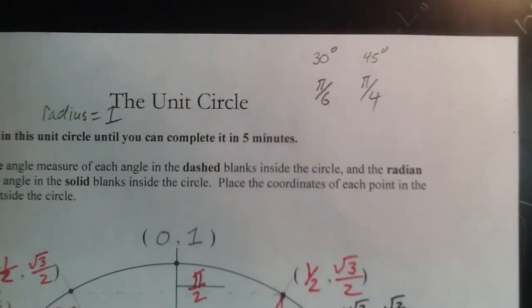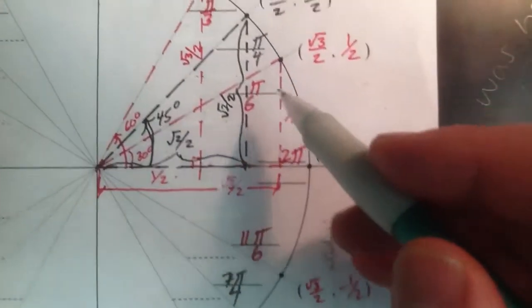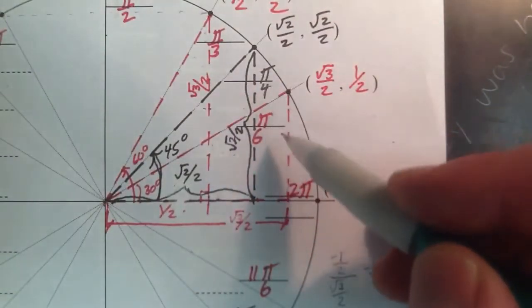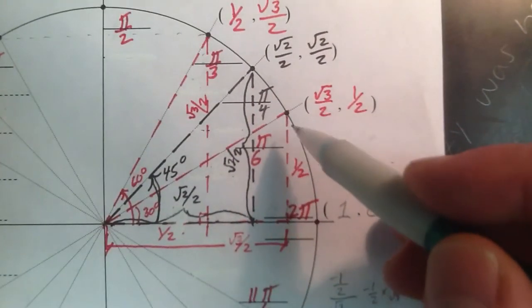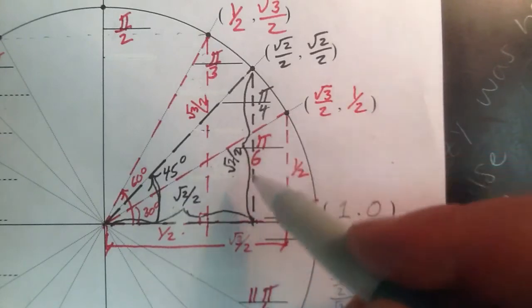And when you know that, then for any one of these particular angles, I always have a 30-60-90 or a 45-45-90 degree triangle.